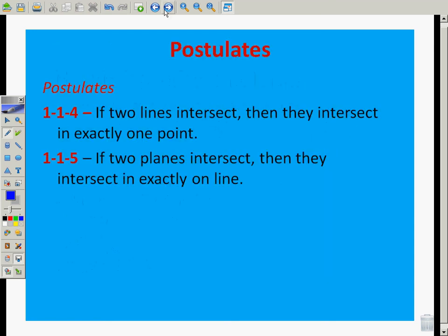Here we go. Moving right along. Postulates 1-1-4. Remember, statements accepted as true without proof. If two lines intersect, then they intersect in exactly one point. So when two lines cross, they intersect at one point. 1-1-5. If two planes intersect, then they intersect in exactly one line. We're going to draw these in just one second.